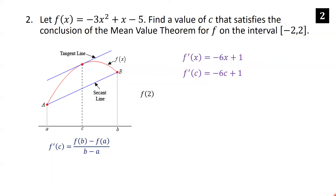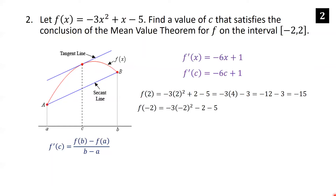Here a is negative 2 and b is 2. So f of 2: we plug 2 into the original function, getting negative 3 times 4 plus 2 minus 5, which is negative 12 plus 2 minus 5, which is negative 15. And f of negative 2: we get negative 3 times 4 minus 2 minus 5; the square of negative 2 is 4, and combining negative 2 and negative 5 gives negative 7, so we have negative 12 minus 7, which is negative 19.